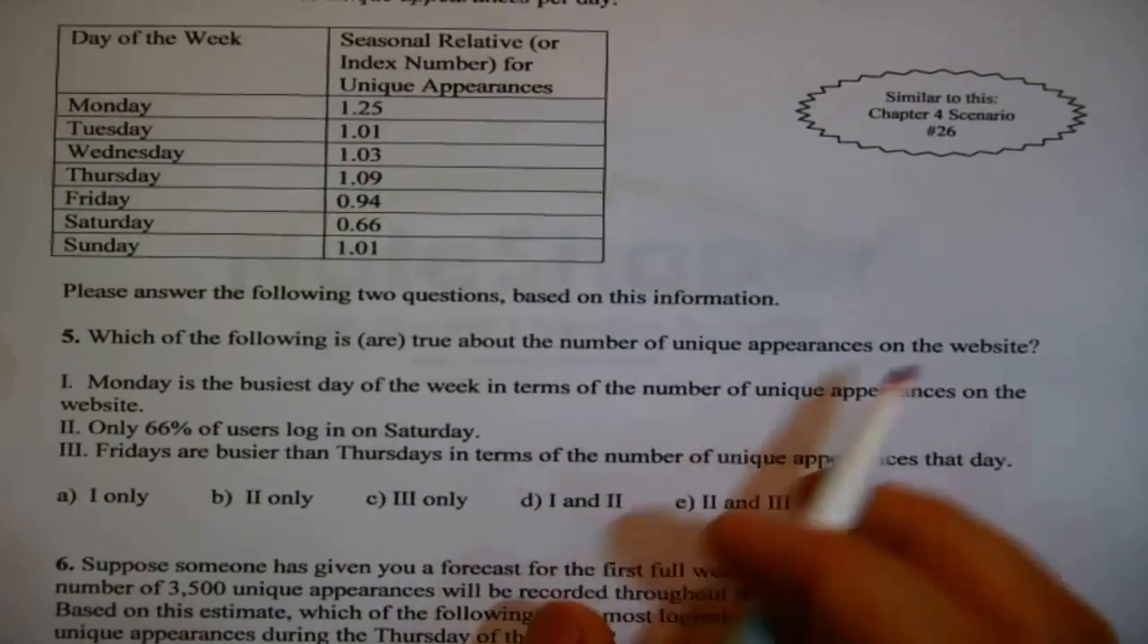Below are the seasonal relatives, also known as seasonal index numbers, that describe the weekly fluctuation in the number of distinct users logging into some certain website, also known as unique appearances per day. So here are the days of the week, and here is a seasonal index, it has already been prepared for us. So first question, what could the first question possibly be about? It's about interpreting this particular index. Well, then let's take these statements one at a time.